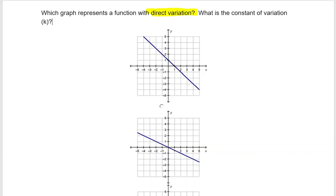When you're looking at a graph, one thing to look for is does the line go through the origin, 0, 0, and has an equation written in the format y equals kx, where k is the constant of variation.